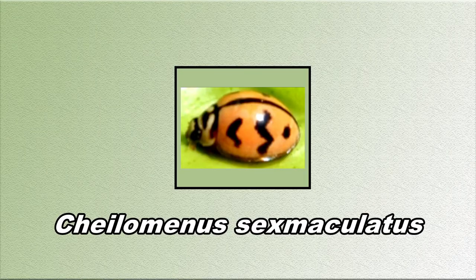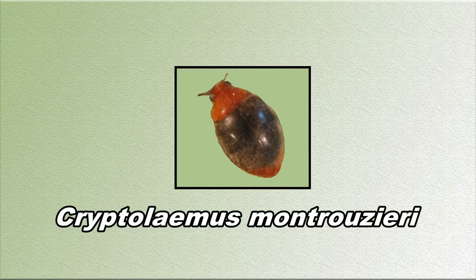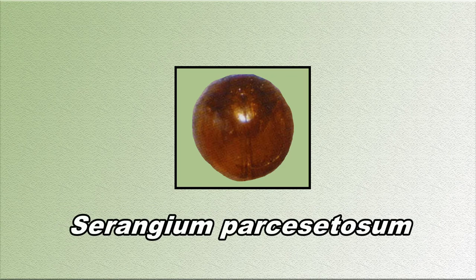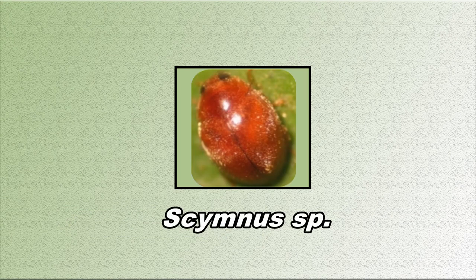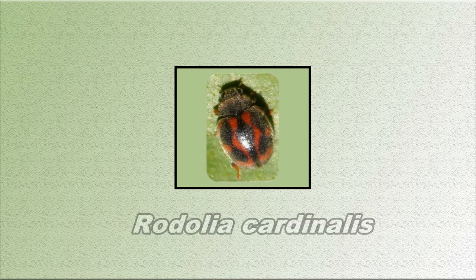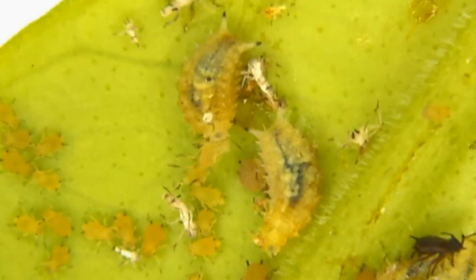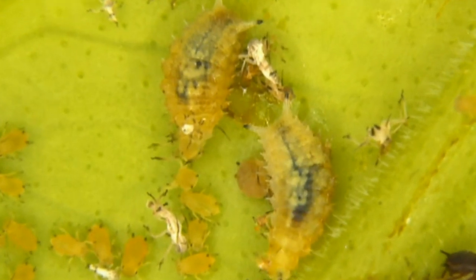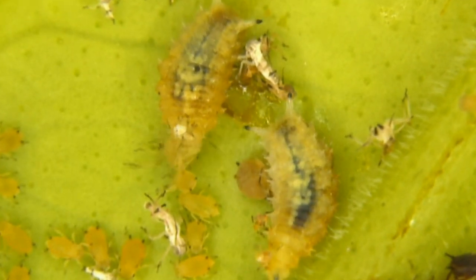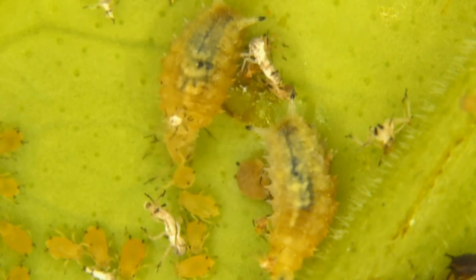Among other predators, coccinellid beetles like Cheilomenes sexmaculatus, Coccinella septempunctata, Cryptolaemus montrouzieri, Scymnus species, and Rodolia cardinalis are found under natural conditions in the citrus ecosystem. Syrphids like Ischiodon scutellaris and Asarkina species — whose larvae feed on soft-bodied insects, particularly aphids, sucking out their body contents — are also present.